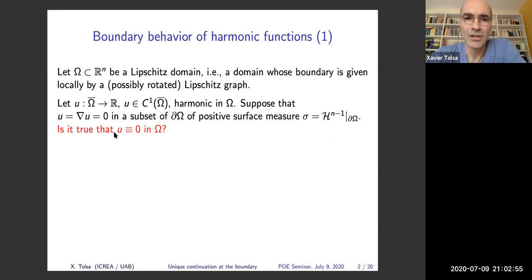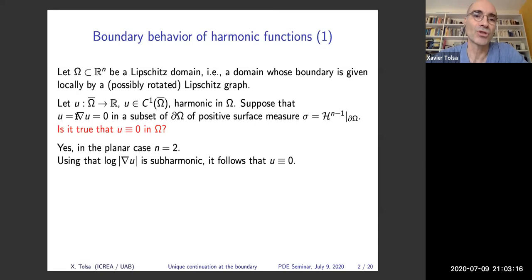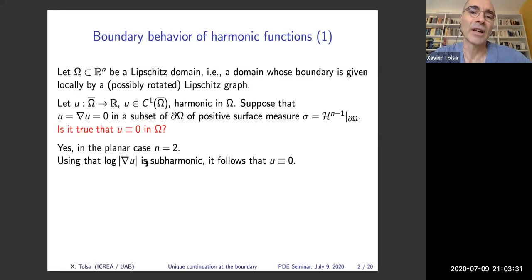In the planar case, this is known to be true. It can be proven using the fact that the logarithm of the modulus of the gradient is subharmonic. Under these assumptions, this logarithm equals minus infinity on the subset. It is known that subharmonic functions can only equal minus infinity on polar sets, unless they are identically equal to minus infinity. So we get the result.